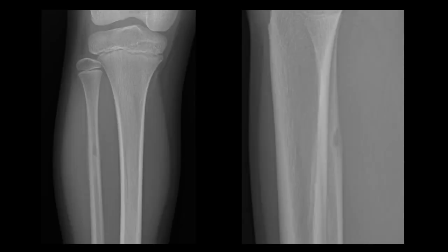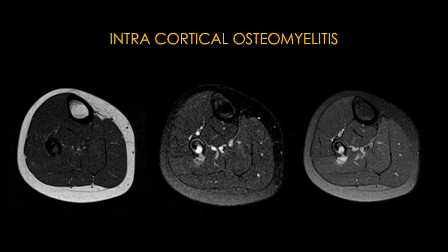In this AP and lateral radiograph of the tibia and fibula, we see a small lucent lesion within the fibular diaphysis. In the AP view we also see some subtle early periosteal reaction. In the lateral view we can actually localize this lesion to be within the cortex — this is an intracortical lesion. The most characteristic finding is thickening of the cortex associated with the lesion in both directions: toward the periosteum and toward the endosteum. Intracortical lesions cause cortical thickening extending in both directions, which is very important to recognize. In this case, the thickening was due to intracortical osteomyelitis.